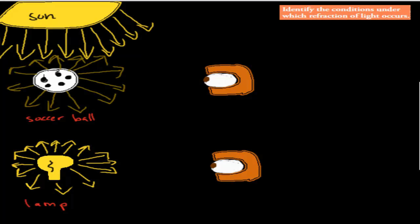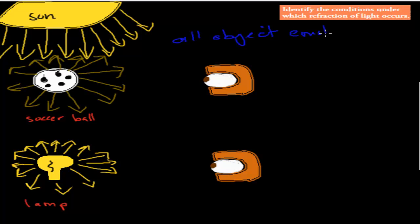In this video, we're going to continue talking about vision itself. One thing you should know in terms of vision is that all objects emit light. And that's important because without that, we wouldn't be able to actually see stuff.